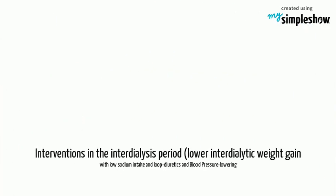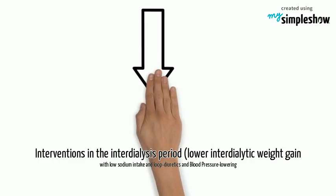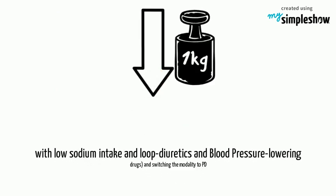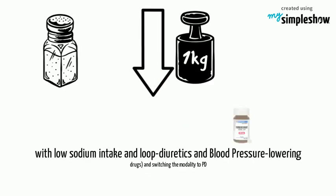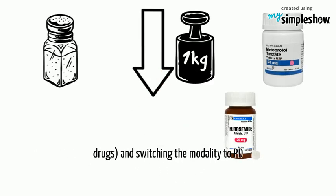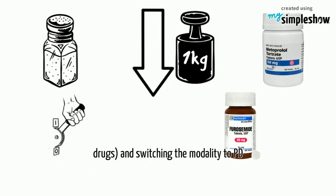Interventions in the interdialysis period include lowering intradialytic weight gain with low sodium intake and loop diuretics, blood pressure lowering drugs, and switching the modality to peritoneal dialysis (PD).